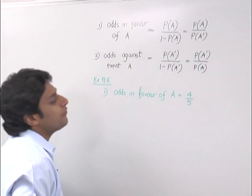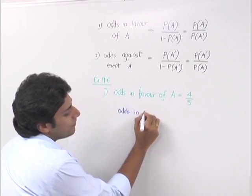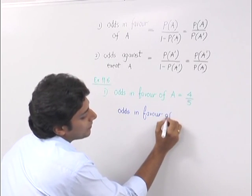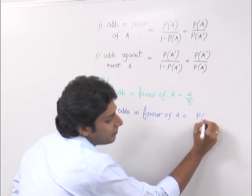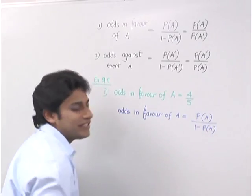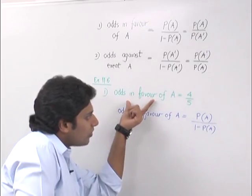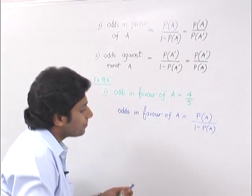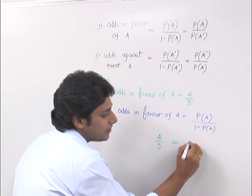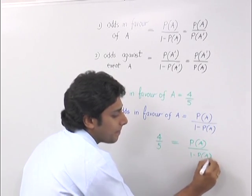We have a formula, a straightforward formula. The formula is odds in favor of A, it is P of A upon 1 minus P of A. This is the formula. Substitute. Odds in favor of A is 4 upon 5. It is equal to P of A upon 1 minus P of A.